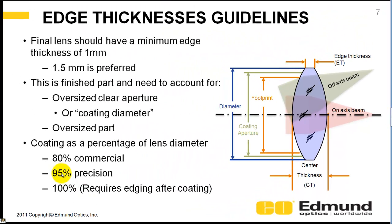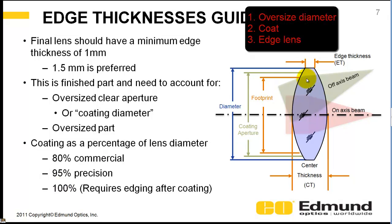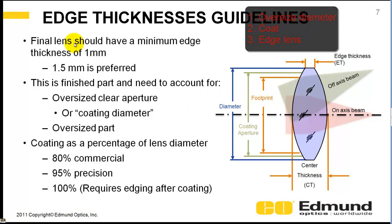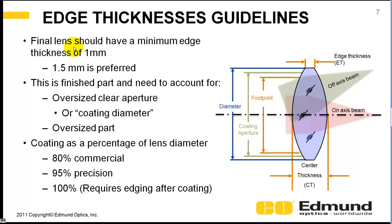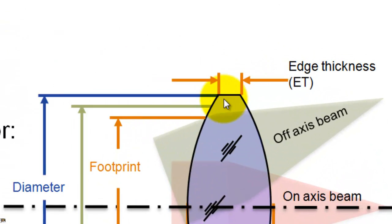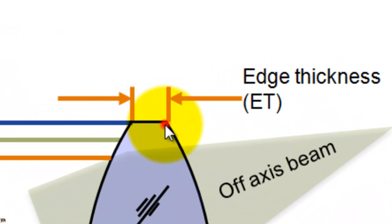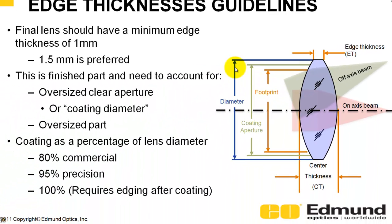Coating chambers operate at elevated temperatures, and it could be such that your metal grows faster than your lens, and your lens falls through your coating chamber. If you need greater than 95%, if you need your coating to go all the way out to the edge of the aperture, you make this part oversized, and then you coat.